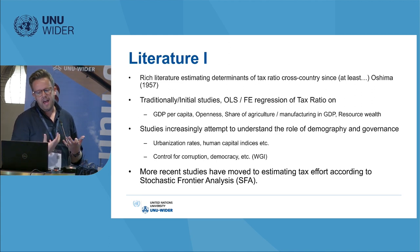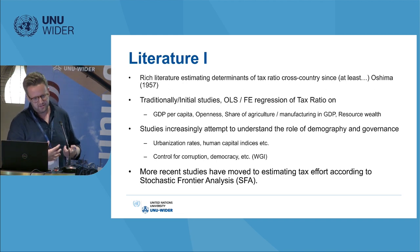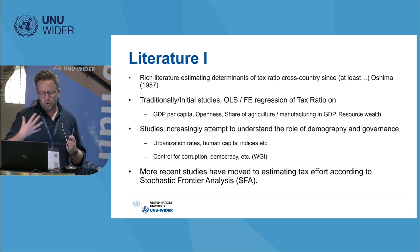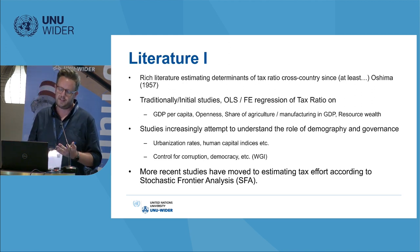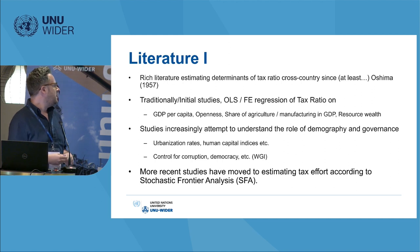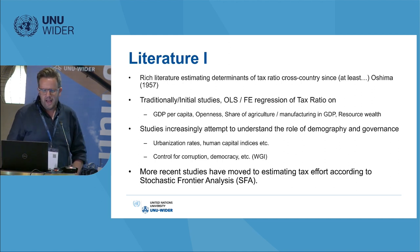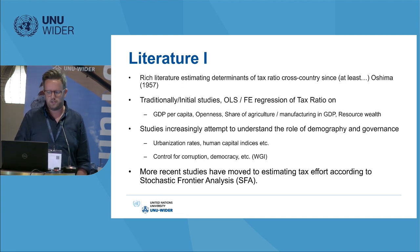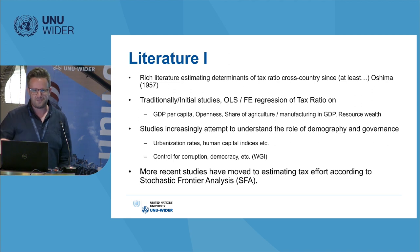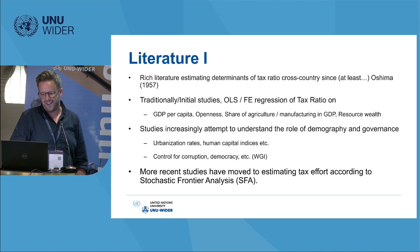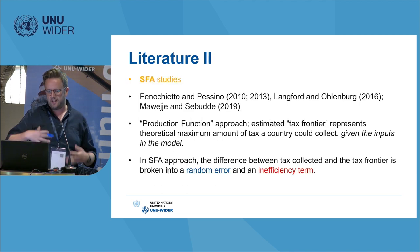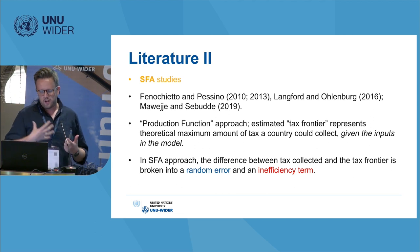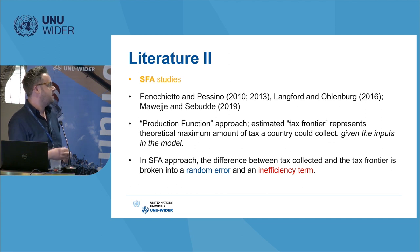Over time, studies increasingly attempted to understand the mediating role of demographic or socioeconomic characteristics, such as how urban a country is, perceptions of corruption, and what kind of government is in place and how that might affect taxes collected. More recently, and where we enter into this debate, is that studies have moved to estimating tax effort according to stochastic frontier analysis. I should caveat that of the three of us on the paper, neither Abrams nor I were the geniuses behind the stochastic frontier modeling — unfortunately our third author is not in the room today. These stochastic frontier studies started to emerge in the tax effort literature around 2010–2013 with some IMF working papers.